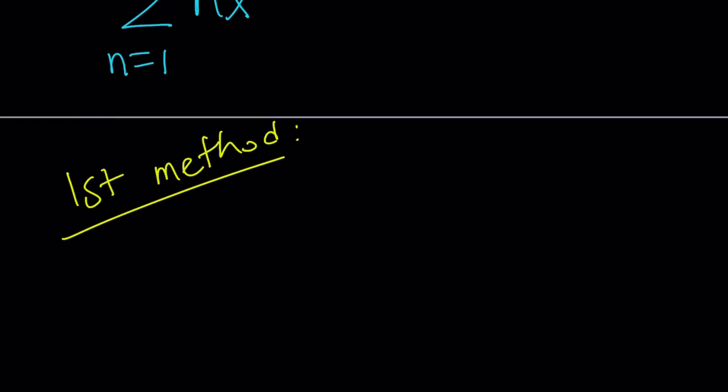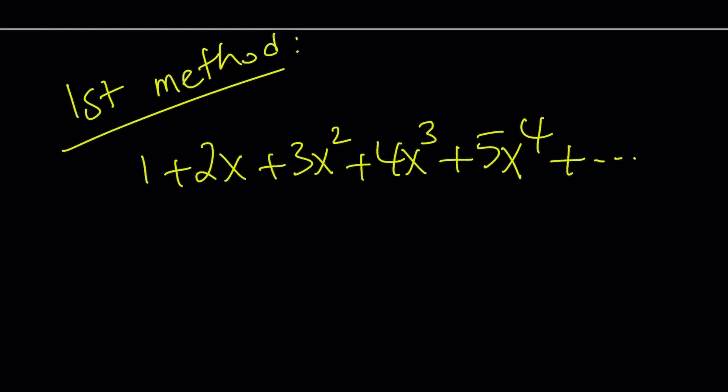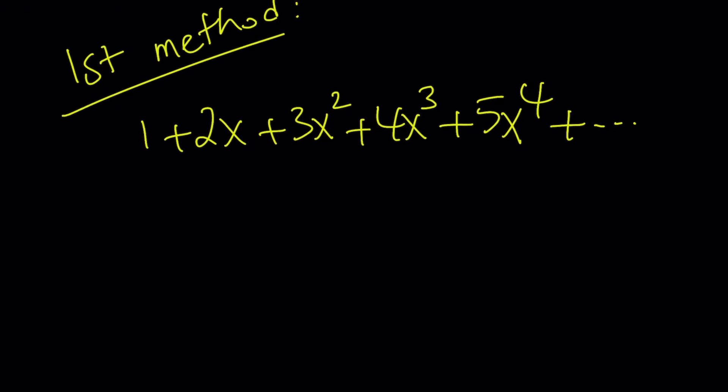So for my first method, I'm supposed to evaluate 1 plus 2x plus 3x squared. Let's expand a little bit more to get a better idea. 4x cubed, 5x to the fourth and so on and so forth, right? That's the sum I'm trying to evaluate. So in order to evaluate this, I'm going to notice the following. 2x is x plus x, 3x squared is x squared plus x squared plus x squared, 4x cubed is x to the third plus x to the third plus x to the third and so on and so forth.